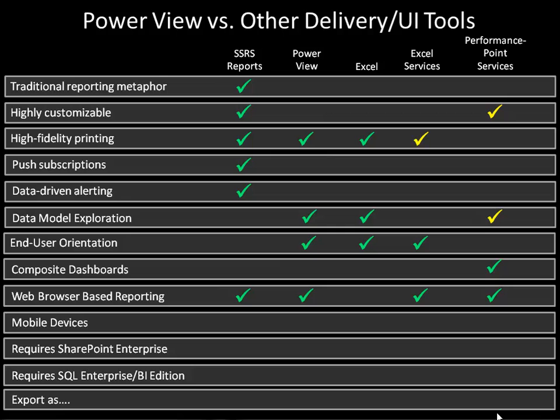If your requirements call for web browser-based reporting, then any of these tools will work fairly well. Excel is an end user application that has to be installed on the desktop, but Excel Services provides the web browser-based version of those Excel documents. For mobile devices, your first choice is still going to be Reporting Services, because all that customization helps you target content that works well on most mobile devices. Excel Services and Performance Point Services do a reasonably good job too, but these products weren't really designed with mobile devices in mind, so there are some compromises when delivering to mobile.